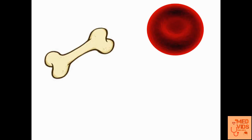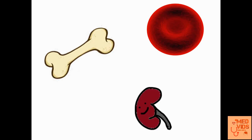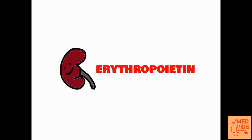We all know that red blood cells are produced by bone marrow, but for this process to take place normally there has to be a stimulus by a hormone which is secreted by the kidneys. That hormone is called erythropoietin, and it is required for normal erythropoiesis to take place.